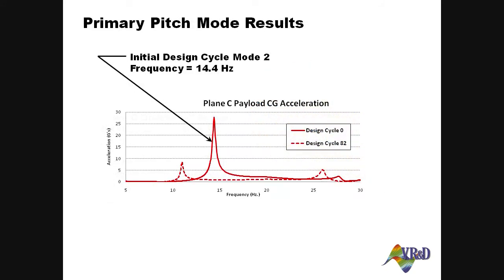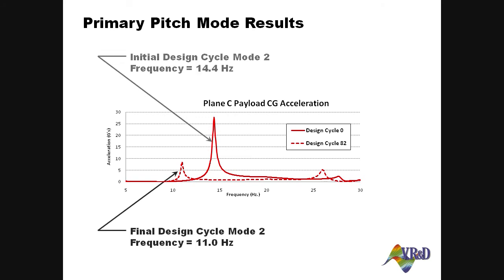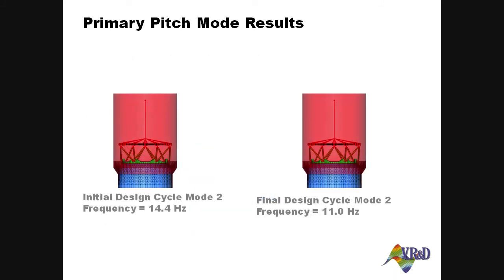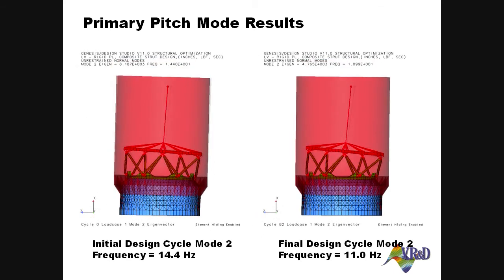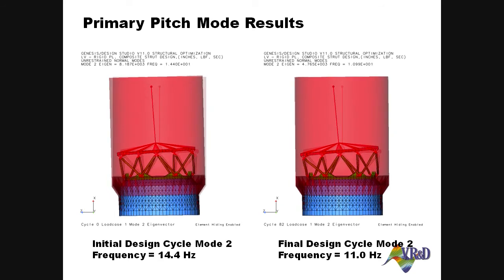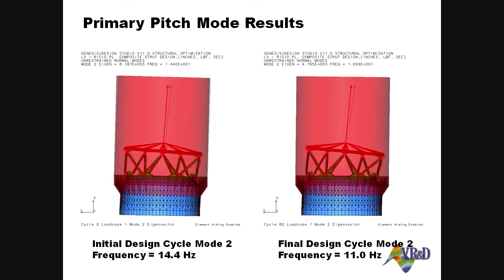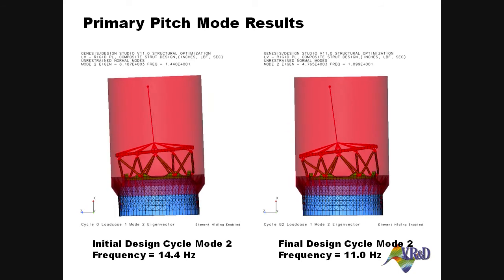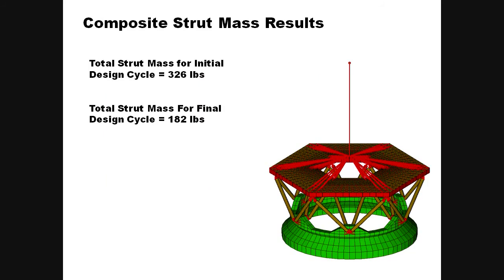The optimized struts are more flexible and show the primary pitch mode has dropped in frequency. The mode shape plots shown are slowed down and exaggerated for visualization purposes; actual displacements are so small that they cannot be discerned without magnifying them. Finally, by tuning the interface structure to minimize payload CG acceleration, the total strut weight was reduced by 144 pounds.